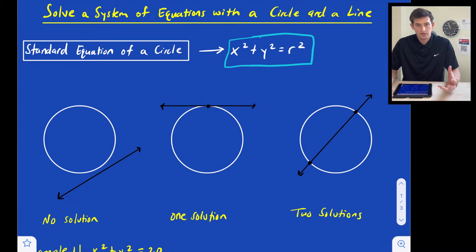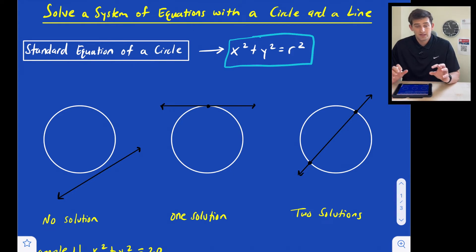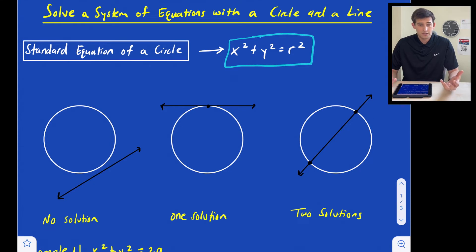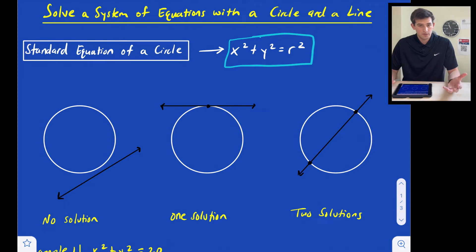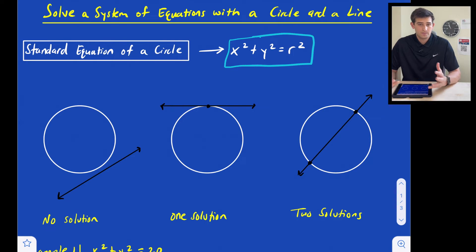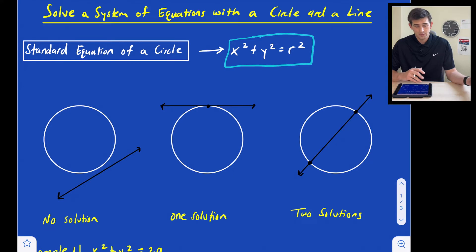When we have a circle and a line, we could have three possible intersection types or solution types. On the left, we could have a circle and a line that don't intersect, so there would be no solution. We could have a line and a circle that intersect at one point, so one solution, or our line could go through our circle and have two intersection points, so two solutions. In this video, we're going to look at three examples, one of each of those solution types.